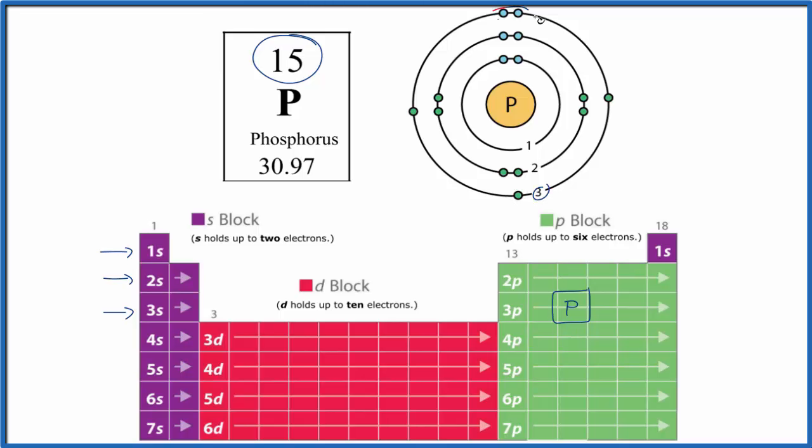Third energy level, we have 2, 3, 4, 5 electrons. And these electrons are important. They're called valence electrons. They're the ones involved in chemical bonds.